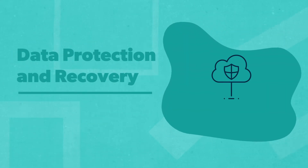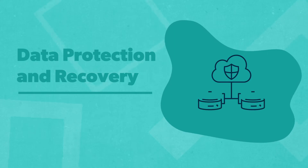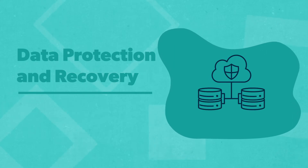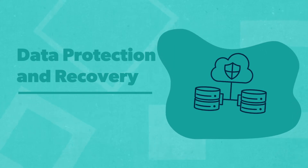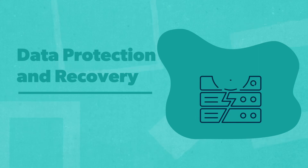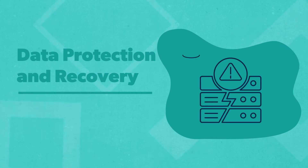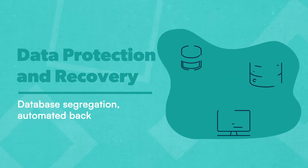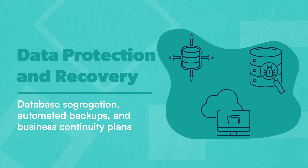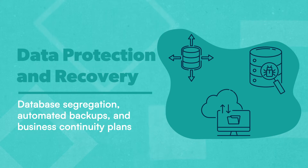The last category of ITGC is related to data protection and recovery. Accidents, natural disasters, or cyberattacks can happen anytime, and without backup or recovery plans in place, companies can lose significant data. Most companies enact ITGCs to minimize data loss through database segregation, automated backups, and business continuity plans.